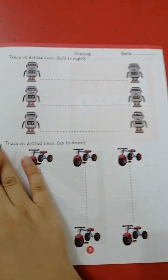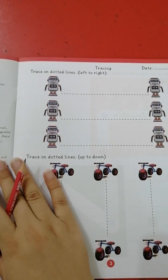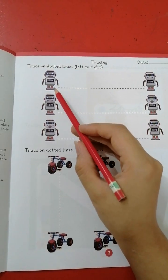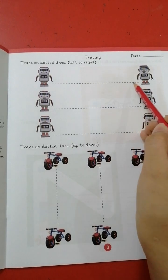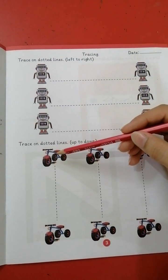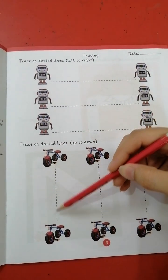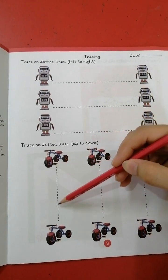On first page we have tracing from left to right. Put your pencil here and trace it. Trace it well. And here from up till down.